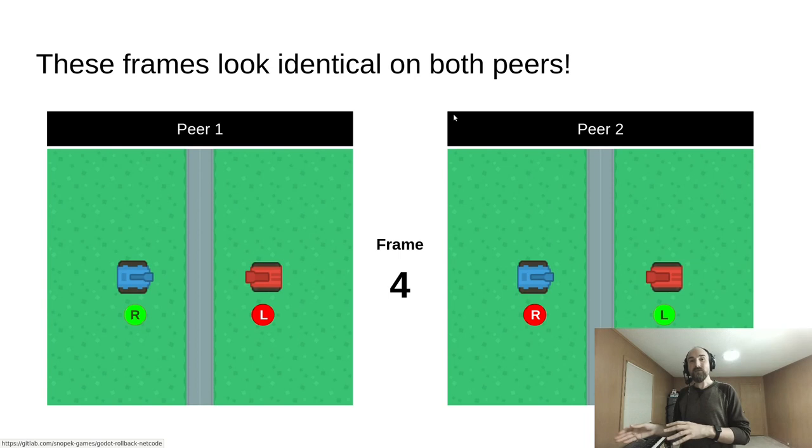This is rollback and prediction at its best. We don't have the actual data, but we are still able to show two identical frames to both players. It's only two frames in this example, but this example is extremely condensed. In a real match, this would be dozens of frames that look identical on both peers.